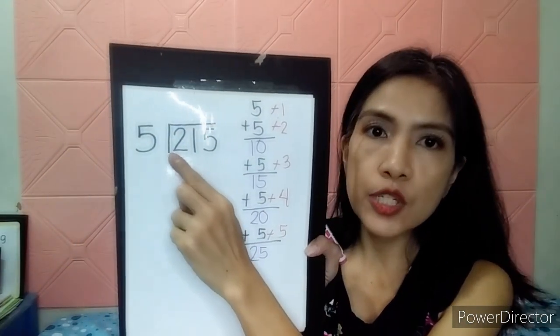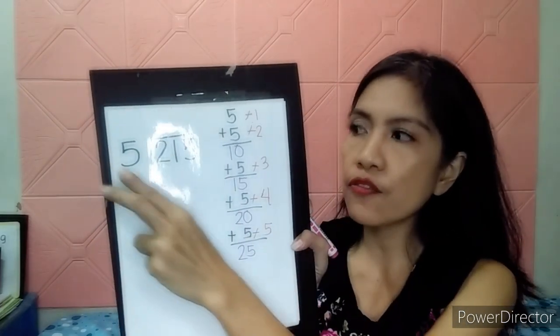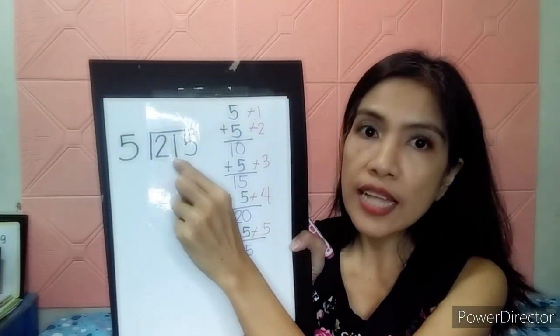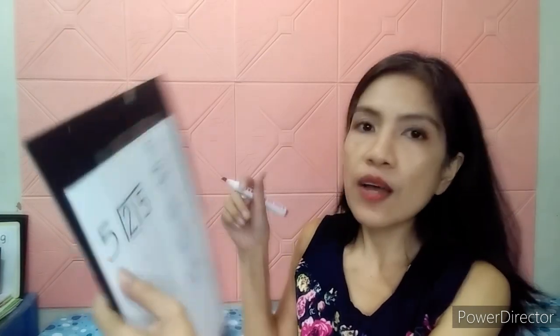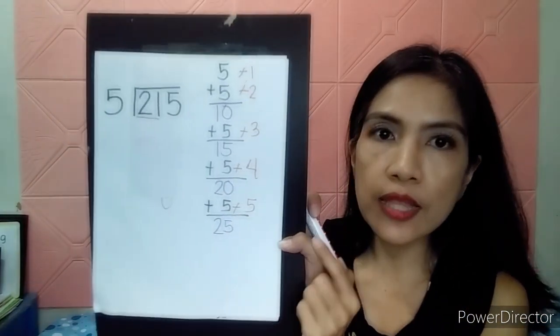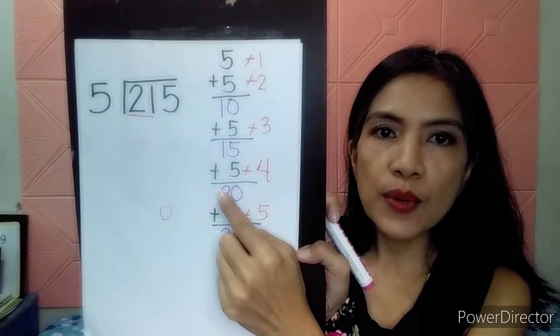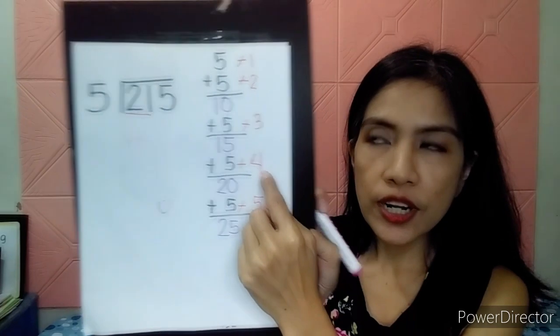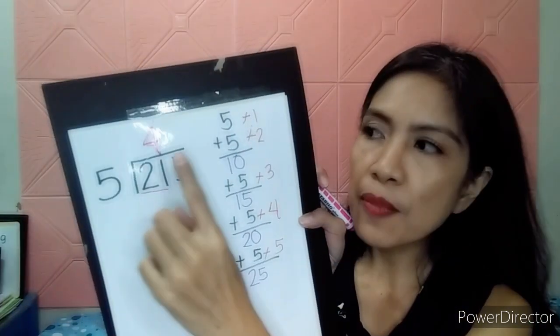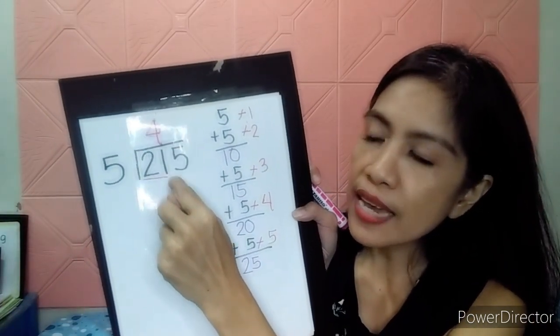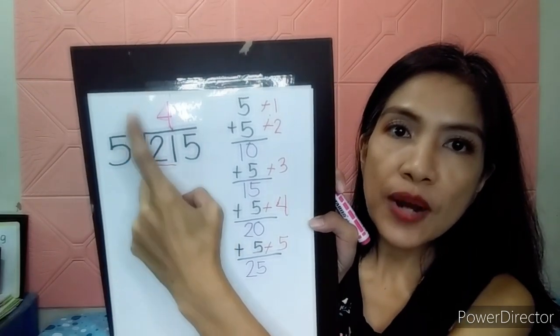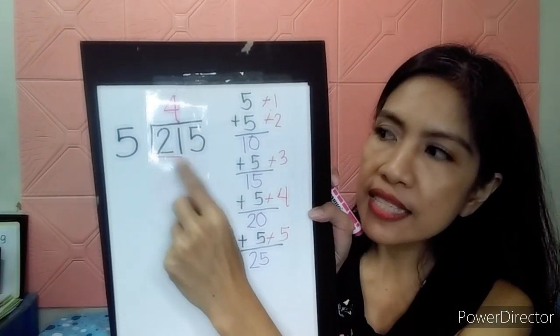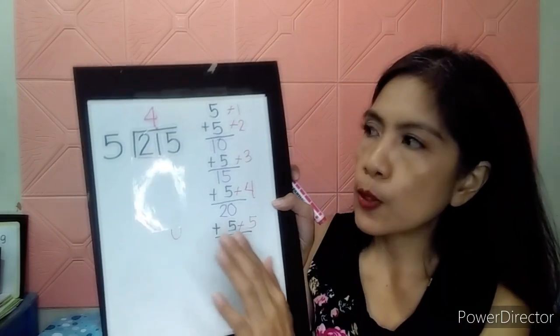Let's continue. Can we divide 2 by 5? No. Because 2 is smaller than 5. So, let's have the 21. And now, look for 21. Where is 21 near? You're correct. 21 is near 20. So, it is 4. Let's write 4 here. Always remember to teach your child that the number should be at the last number. Write the answer at the last, not on the first one. Para hindi sila malito.